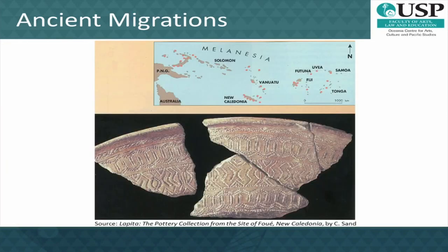Suddenly, within a few centuries, a well-marked cultural horizon appeared from the Bismarcks to Samoa. On present evidence, this Lapita horizon was the first to have reached the islands of remote Oceania. Because of the absence of pre-Lapita occupation in remote Oceania, it has been suggested that further expansion into the eastern Pacific required considerable improvement in navigational skills and technology not available to Pleistocene and early Holocene seafarers.